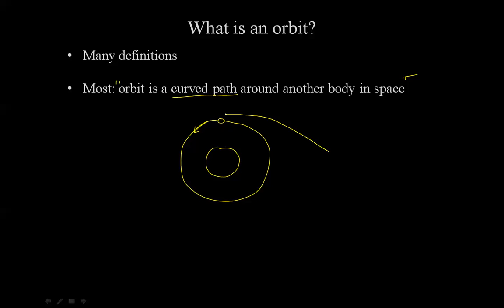It is also following this curved path in that direction, for example, around this body. But is this an orbit, or is this an orbit? The answer is, they are both orbits.